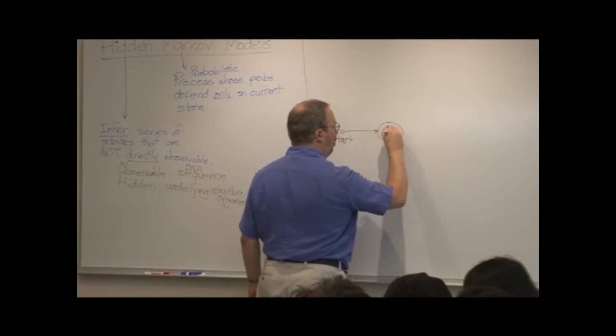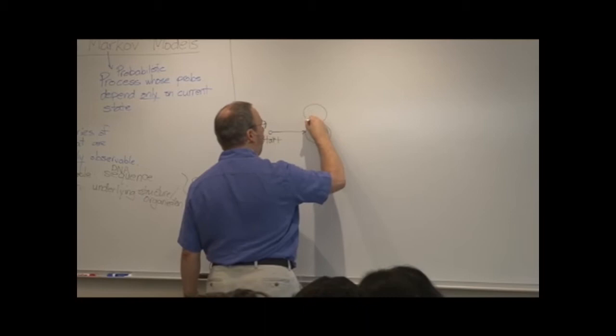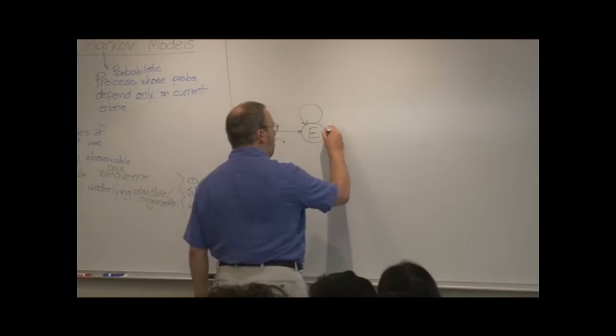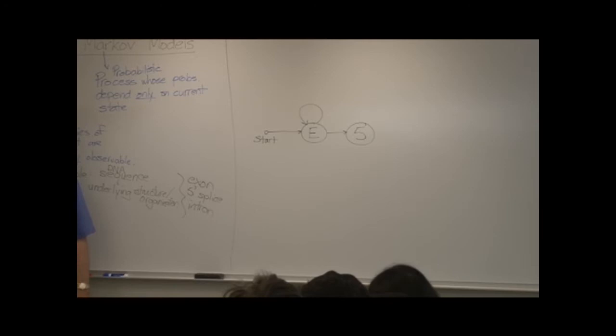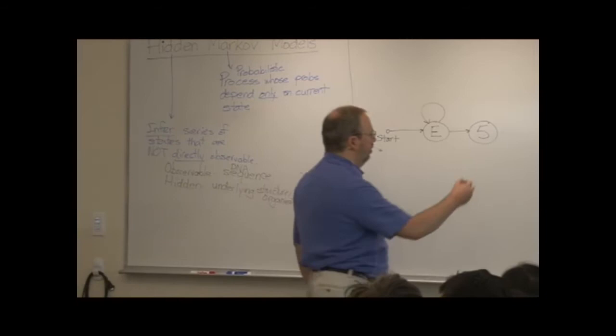So in this example, we're going to be starting in an exon part of a gene. That's where our first nucleotide is. We may then continue in the exon for some unknown number of nucleotides before moving on to the five prime splice site. Unrealistic assumption number one. We're going to assume that the splice site is exactly one nucleotide long. You know that's wrong, but it's going to make our lives easier for now.